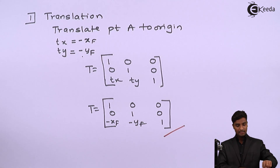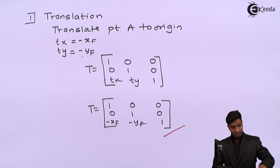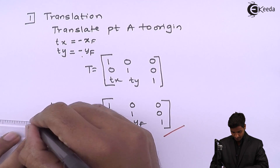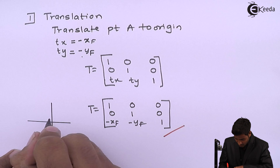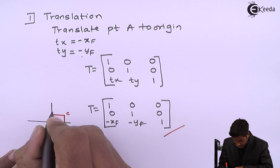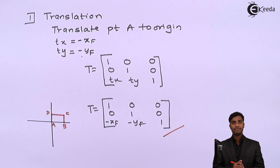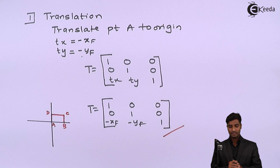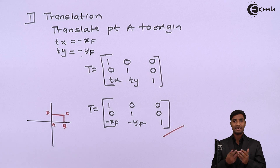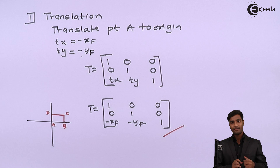Now the figure has been brought to the origin — it will appear as A, B, C, D at the origin. Now we can perform the scaling operation, because scaling is done with reference to the origin. We have to enlarge the figure into A-dash, B-dash, C-dash, and D-dash, so now we will do scaling.